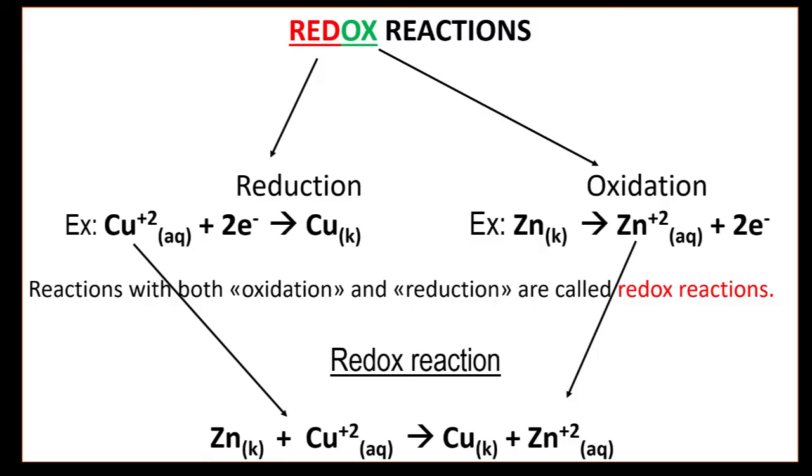For example, copper is reduction and zinc is oxidation. According to the total reaction, zinc gives its electrons and copper takes electrons from zinc. Redox reaction occurs until electron chain exchange ends or stops.